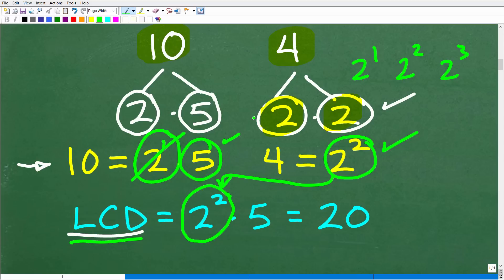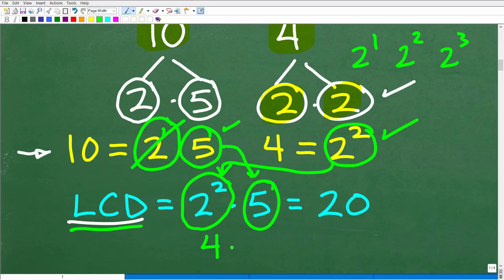And then we have a 5. We need that represented. We'll put that in. So we have 2 squared times 5, which is what? 2 squared is 4 times 5, which is 20.